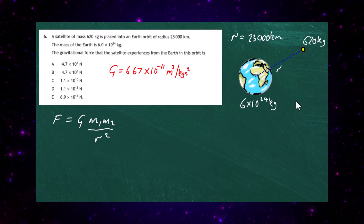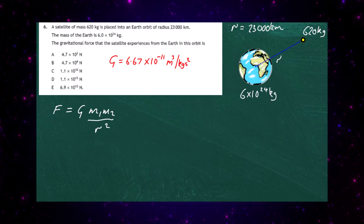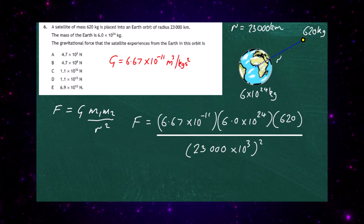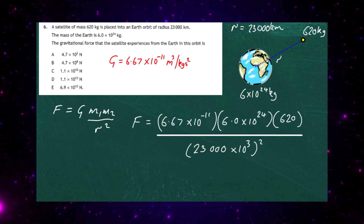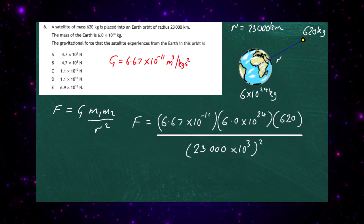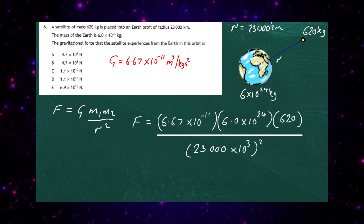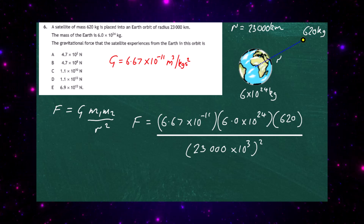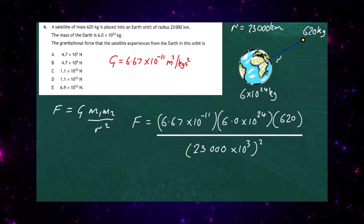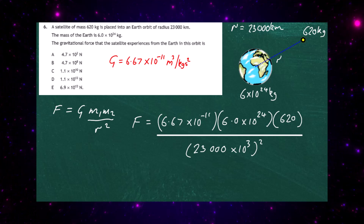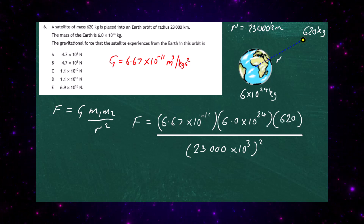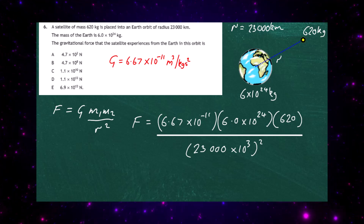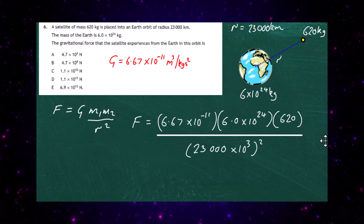All we have to do is plug in the numbers to get this expression. It's very important to remember that the radius is given in kilometres, so 23,000 kilometres must be multiplied by 10 to the power of 3 to convert to metres, and remember it has to be squared as well, as some people forget.